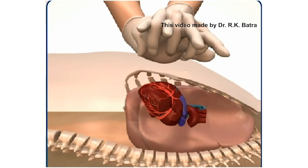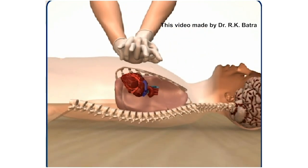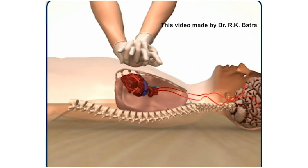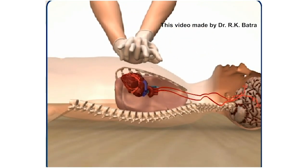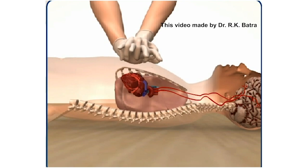Depth of compression is about 5 to 6 cm, which is roughly one third of the anteroposterior diameter.